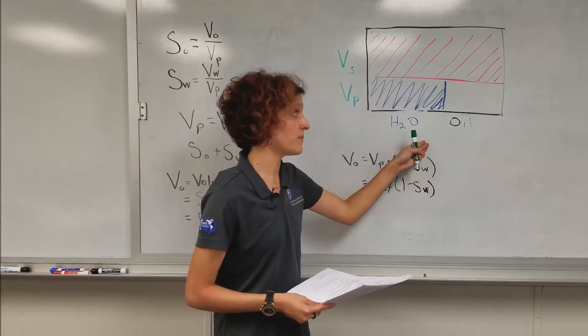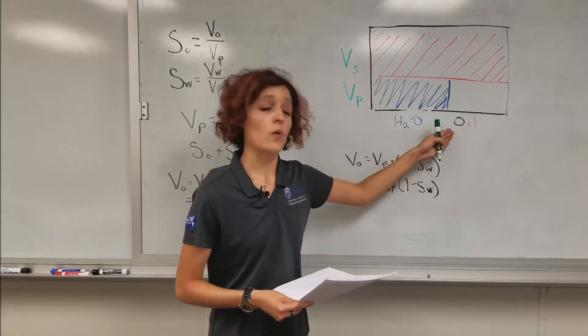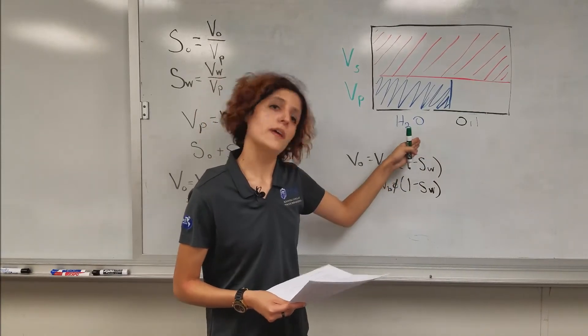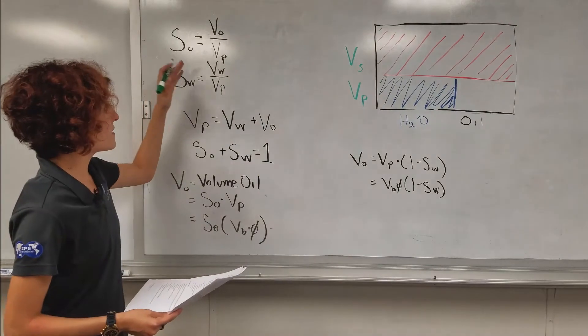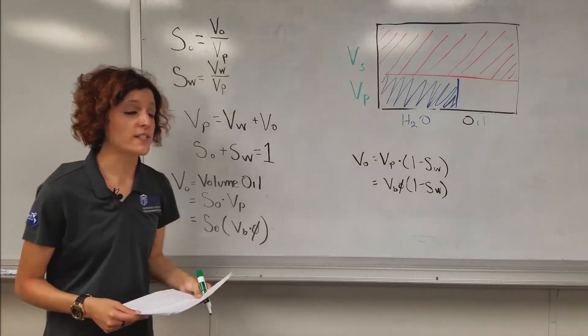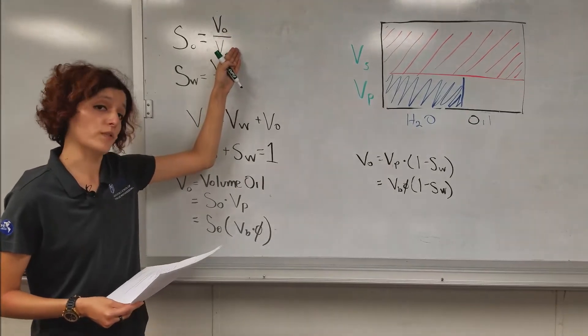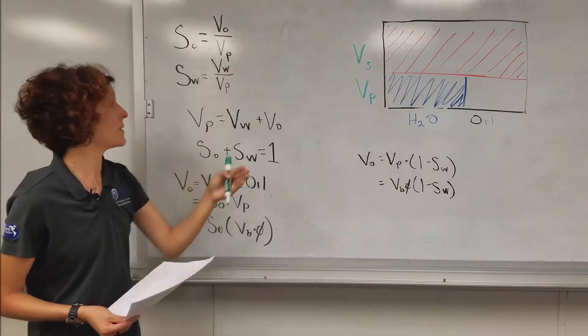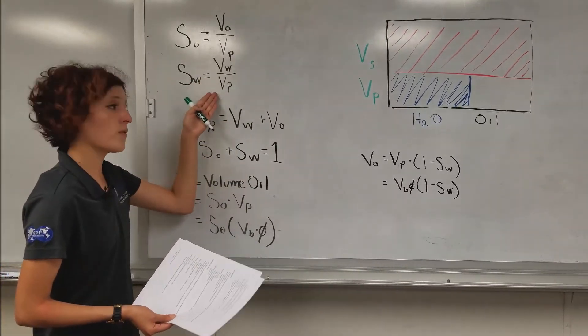There's a percentage that is water, and there's a percentage that is oil. We'll call this our oil saturation, or our water saturation, which we'll refer to as S sub O. And all this is, is our volume of our oil over our volume of our pore space. It's just the ratio. Same thing with our water. The volume of our water over our pore volume.